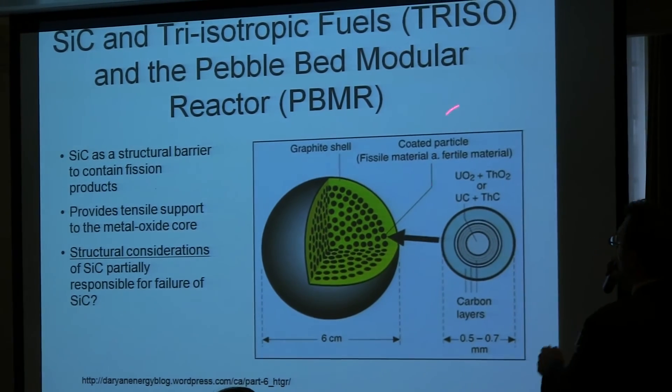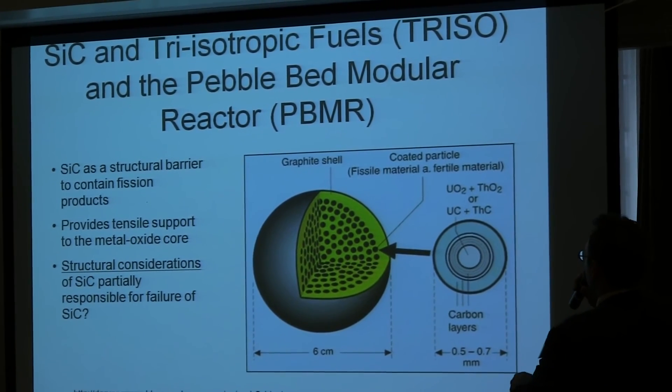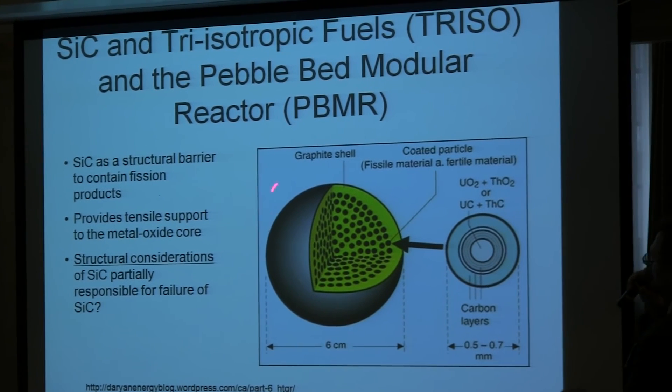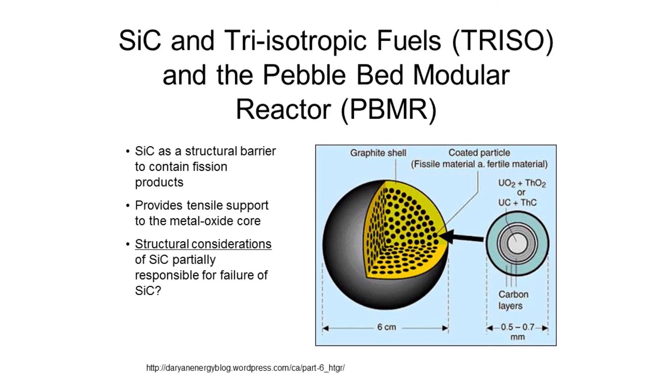Why is the pyrolytic carbon used? It's because it's basically chemically inert in a fluorinating bath. However, it also has no tensile strength — there's no structural integrity to pyrolytic carbon. Here's the UO2 or ThO2, thorium dioxide, that could be used at the heart of these TRISO shells. In an alternative version, you can use graphite, but again, graphite has very, very little structural integrity.